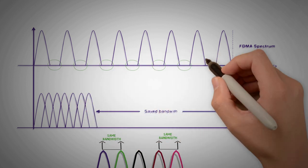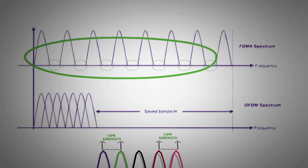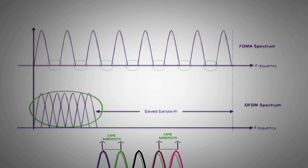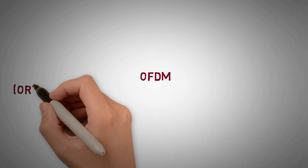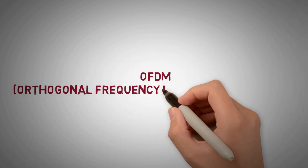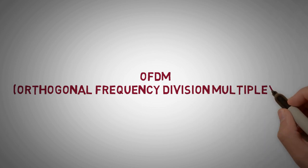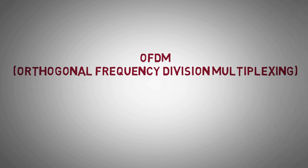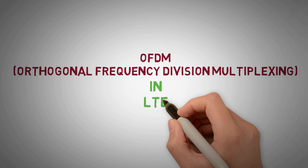As a result, the sub-carriers can be closely packed to increase channel efficiency. Now, before looking at the multiple access part, let's understand how OFDM or orthogonal frequency division multiplexing works and how it's used in long-term evolution.